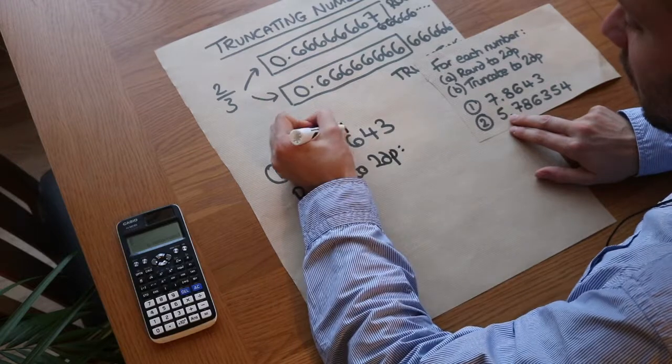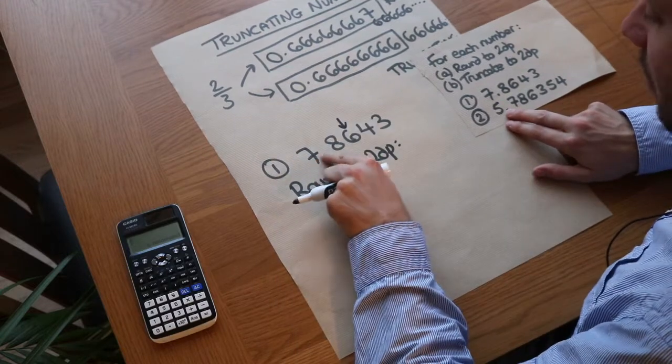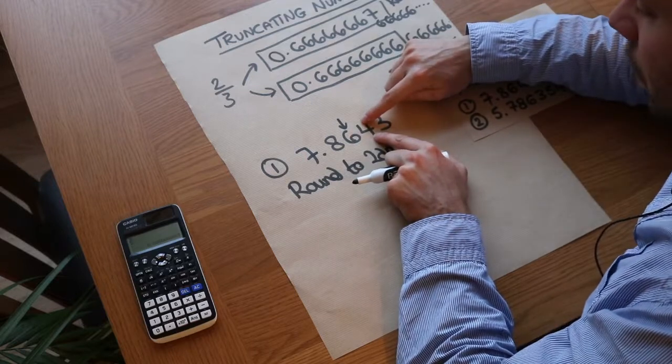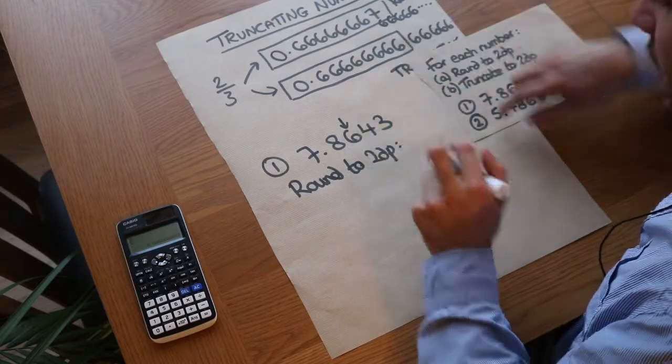If we round to two decimal places, we keep up to the second digit after the decimal point, so it'd be 7.86. We check the digit after: is it greater than or equal to five? No, it isn't, so that six stays as a six.